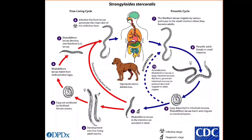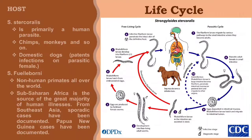The L3 larvae are supposed to travel through the bloodstream and lymphatics to the lungs, where they are coughed up and ingested. L3 larvae appear to be capable of migrating to the intestine via different paths. The larvae molt twice in the small intestine before becoming adult female worms.